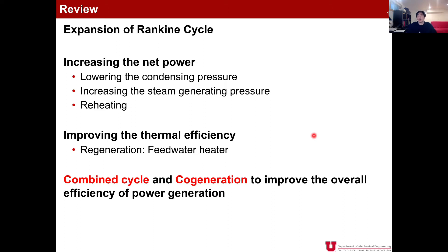These days, as a contemporary power plant concept, we often use combined cycle, which combines gas power cycles and the steam Rankine cycle. Or we can also use the cogeneration concept, which combines power generation and heat generation to benefit most out of the steam generation. So far, we have focused on heat engines. Depending on what kind of working fluids we use — either gas or vapor — we talked about gas power cycles and vapor power cycles. But all of them are based on the heat engine concept.